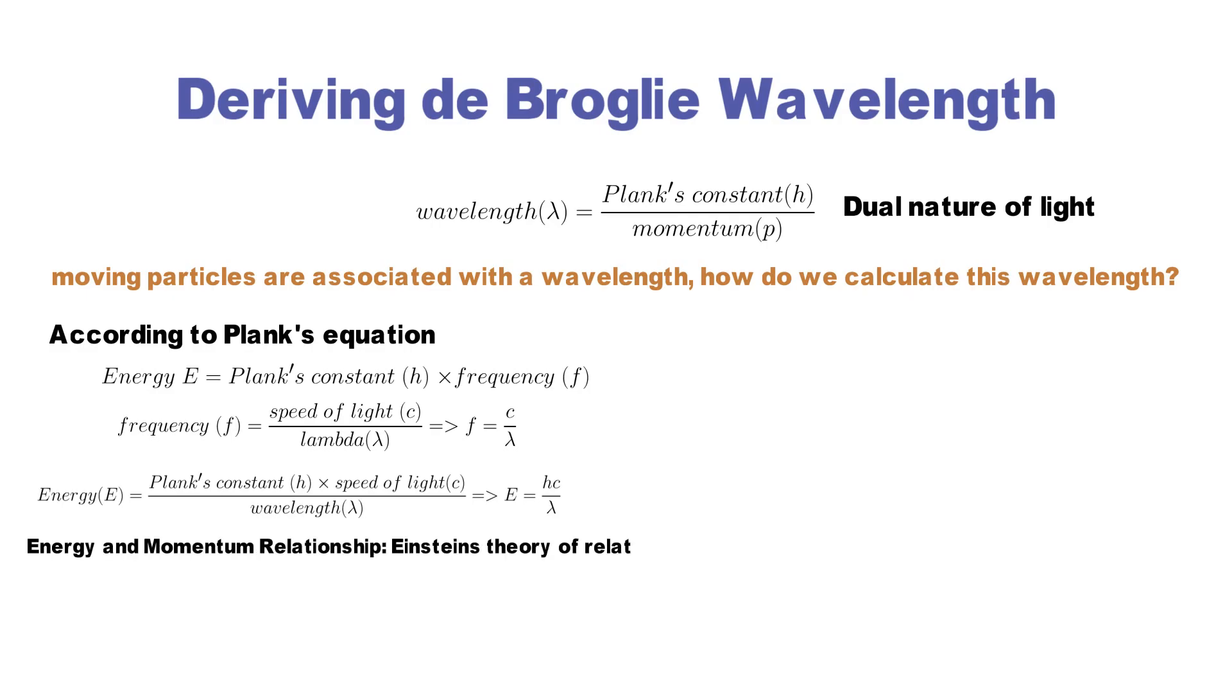From Einstein's theory of relativity, we know that the energy of a photon can also be expressed in terms of its momentum p and the speed of light c. By comparing these two equations and canceling speed of light from both sides of the equation, we get Planck's constant divided by wavelength equals momentum.